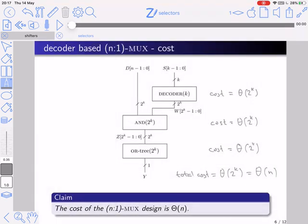What about the cost of the design? Well, this design consists of three parts. The OR tree has a cost which is 2 to the power of K. The row of ANDs also has a cost of 2 to the power of K. And the decoder, recall from the chapter on decoders, has a cost of 2 to the power of K. So we sum up these three costs, we get 2 to the power of K times 3. 2 to the power of K is N, and therefore the cost of the N to 1 MUX is big Theta of N.